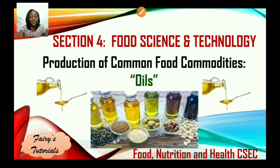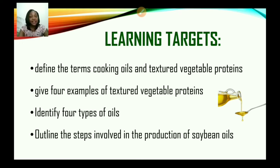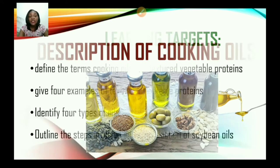Food Science and Technology. Still looking at the production of common food commodities, and today we'll be looking at oils. Now let us look at the learning targets. By the end of today's session you should be able to define the terms cooking oils and textured vegetable proteins, give four examples of textured vegetable proteins, identify four types of oil, and also outline the steps involved in the production of soybean oils.